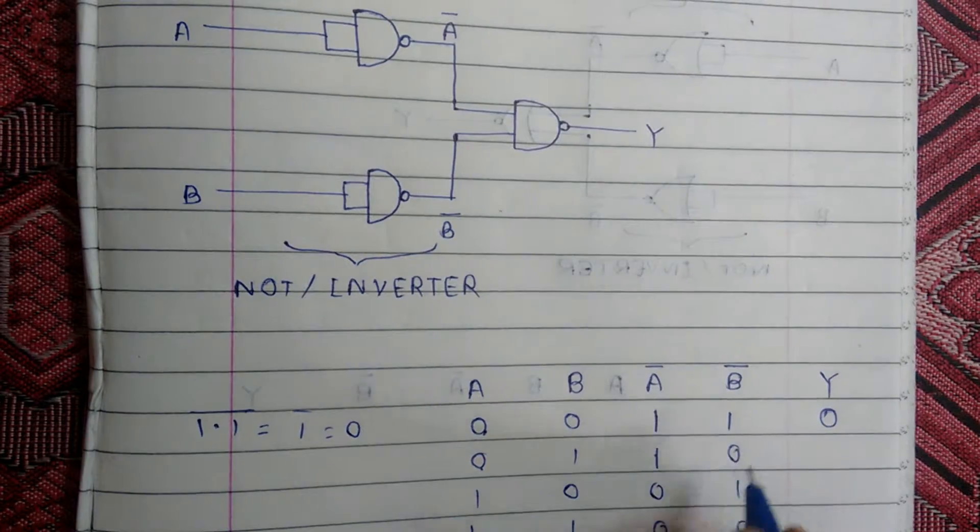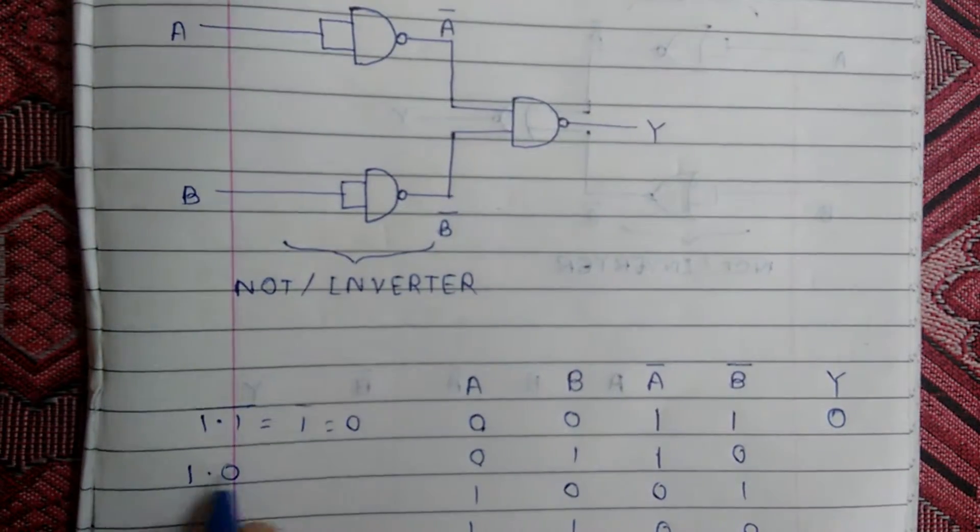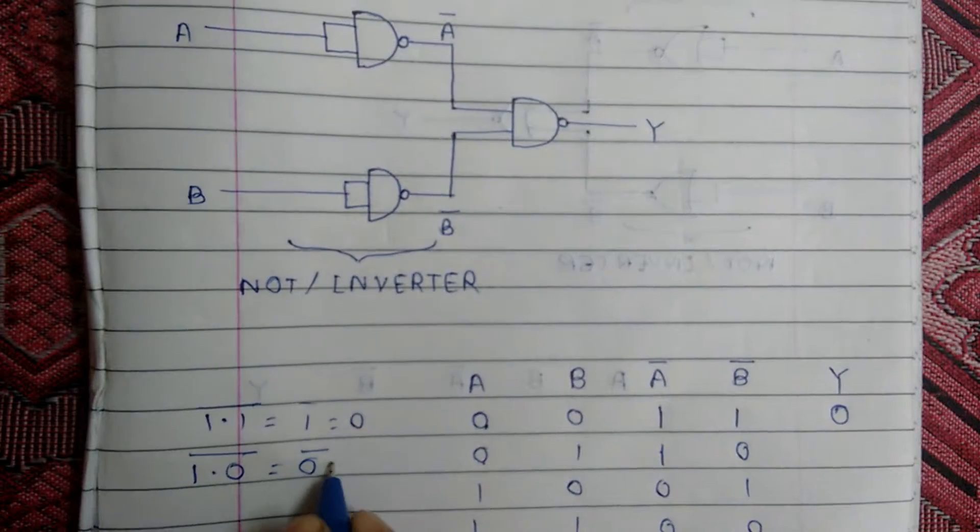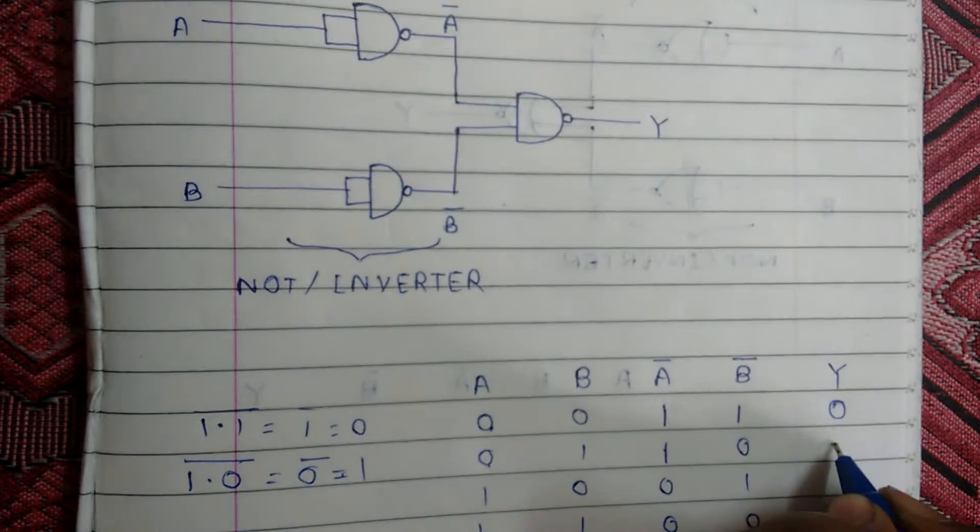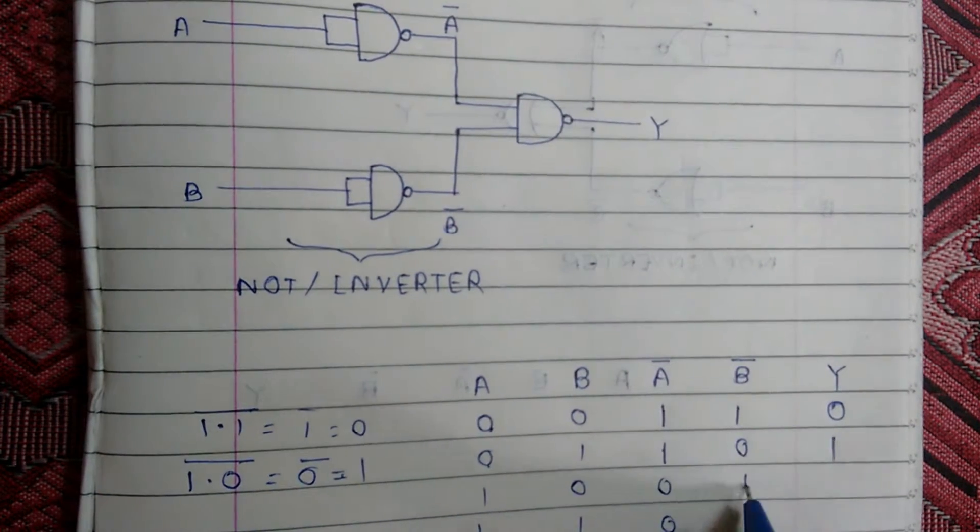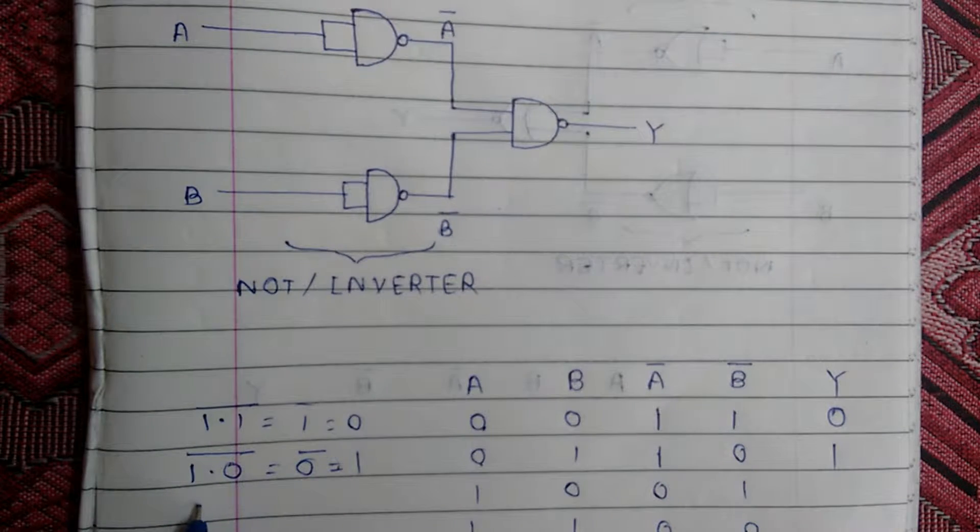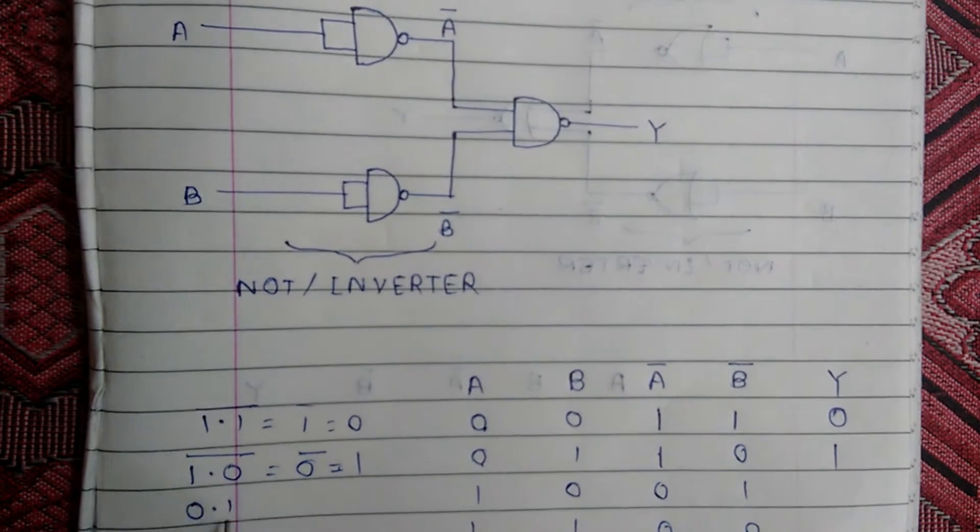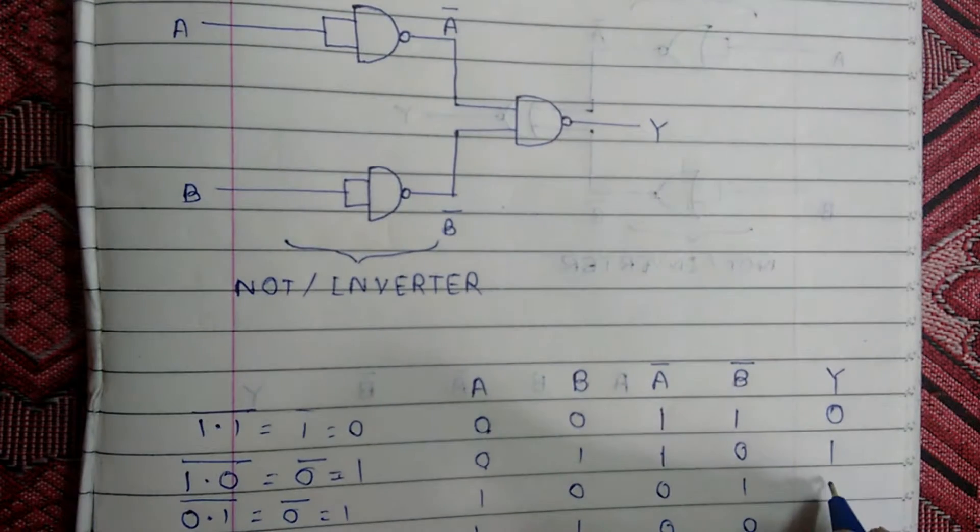If 1 and 0 are inputs of this NAND gate, then 1 times 0 and its complement equal to 0's complement equals 1, so our output is 1. If 0 and 1 are inputs, then 0 times 1 and its complement equal to 0's complement equals 1.